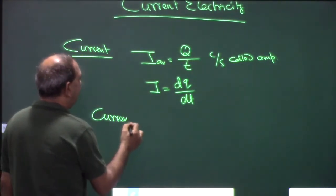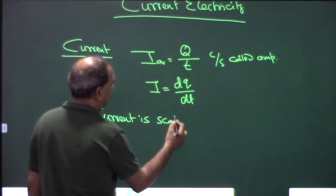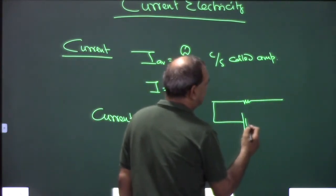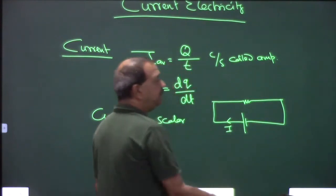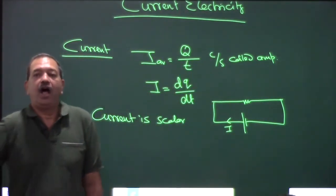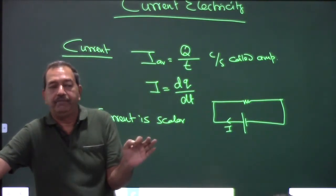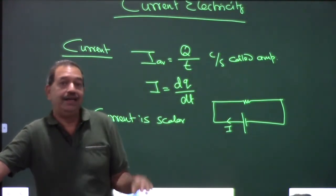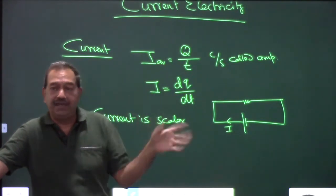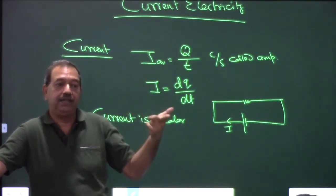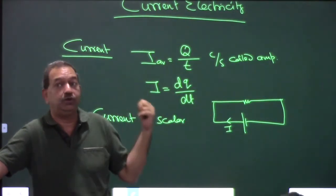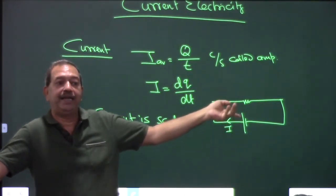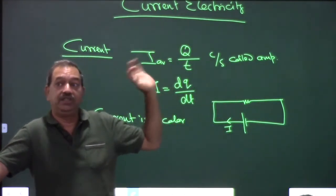Current is a scalar quantity — but what does its direction mean? Vector quantities are those which have both magnitude and direction, while scalar quantities do not have direction. But current does have a direction, and when direction changes, the formula V = E + IR or E − IR also changes.